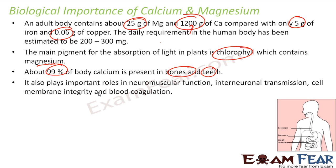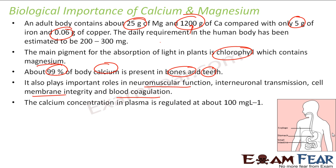Calcium also plays an important role in blood coagulation, membrane integrity, and neuromuscular functions. Calcium concentration must be regulated because calcium is critical — there has to be a mechanism to control the calcium concentration.